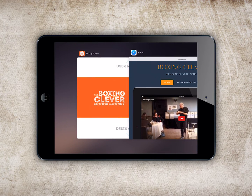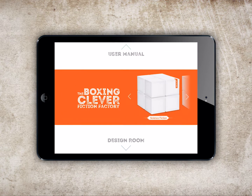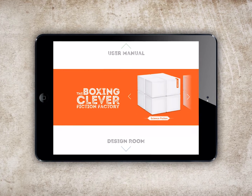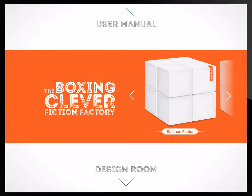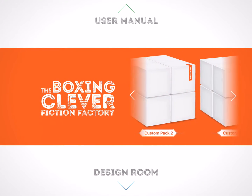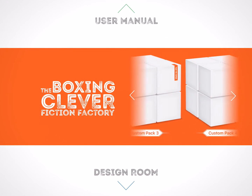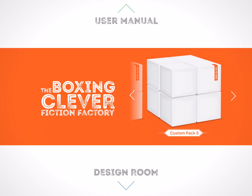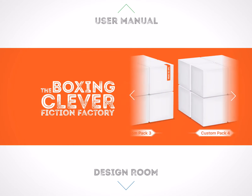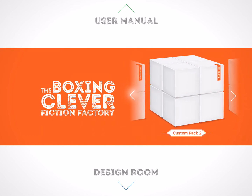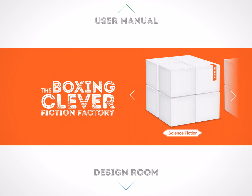So here is the main screen. You can swipe through the five different available packs, or use the arrows to navigate left and right. In the previous video, I used the design room to create a science fiction themed pack. I can open this now by tapping on it.